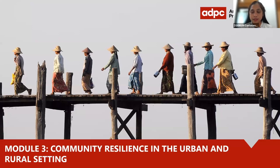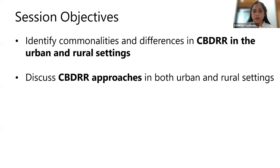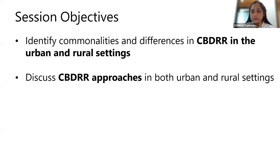Module 3, as I mentioned, is about community resilience in the urban and rural setting. The objective of this session — why we discuss this in community-based disaster reduction — is to understand the commonalities and differences between urban and rural settings, and to discuss the CBDR approach in both settings: how it differs, what challenges we face in CBDR implementation, and what we need to consider when implementing CBDR activities.